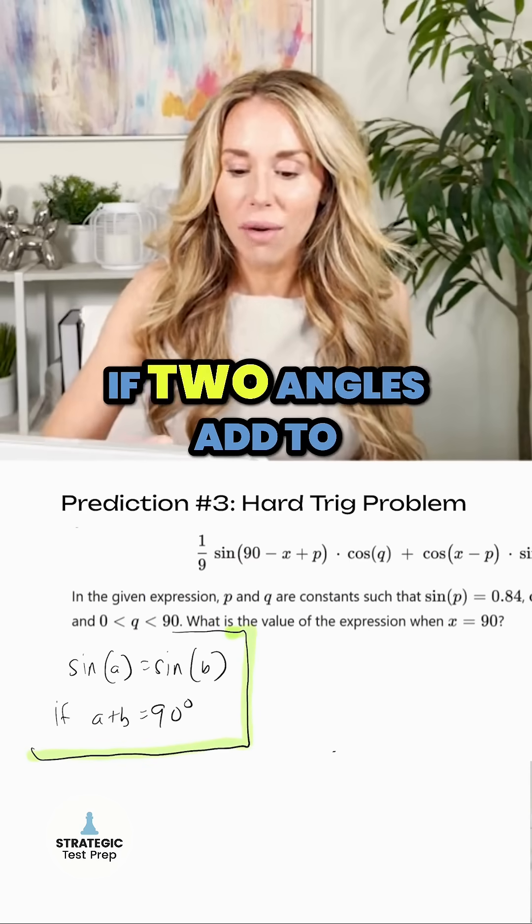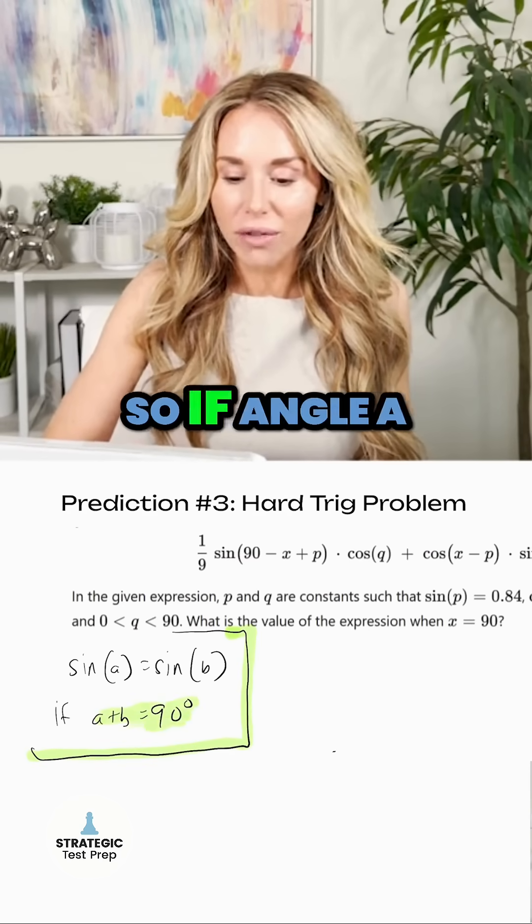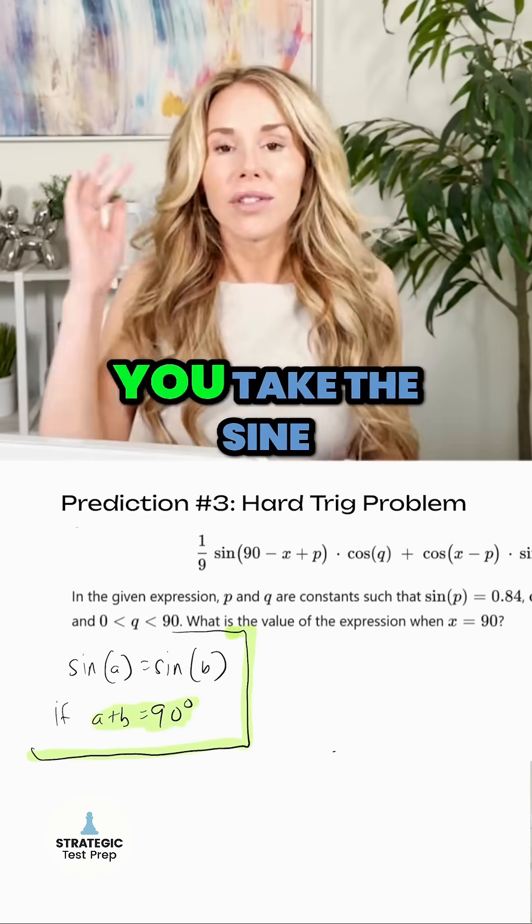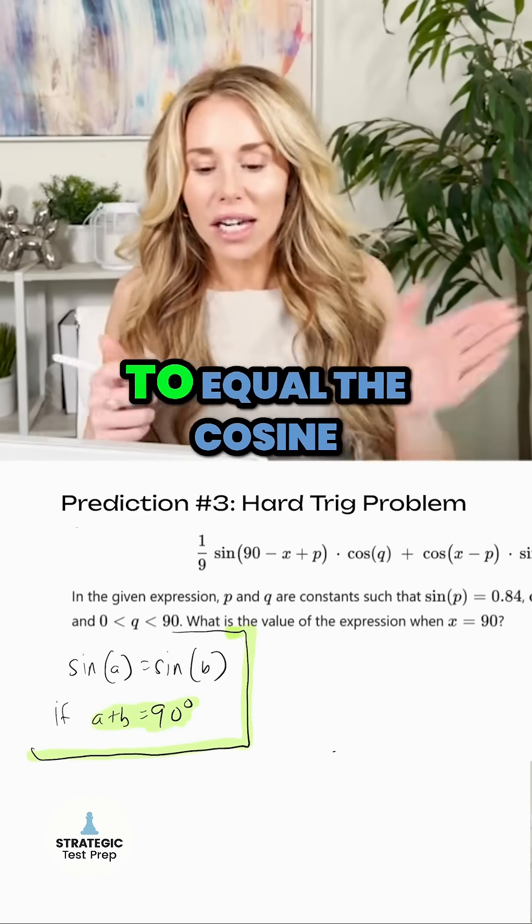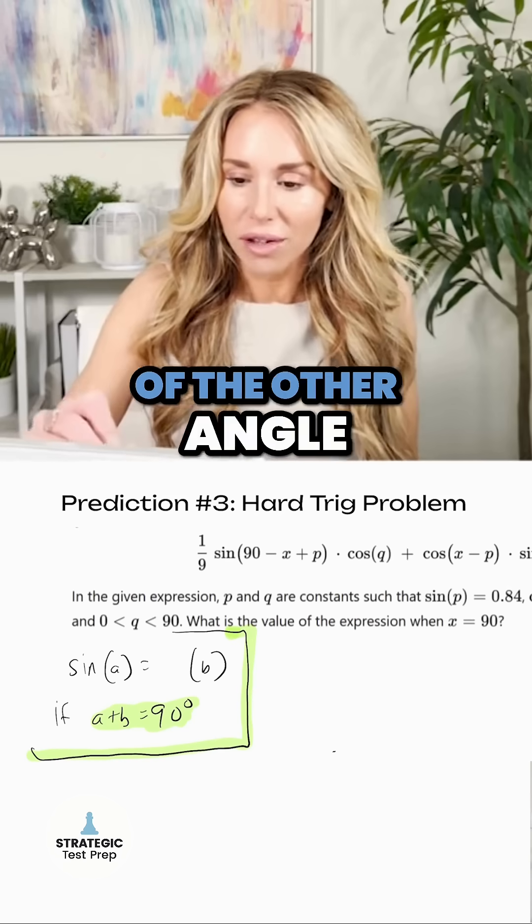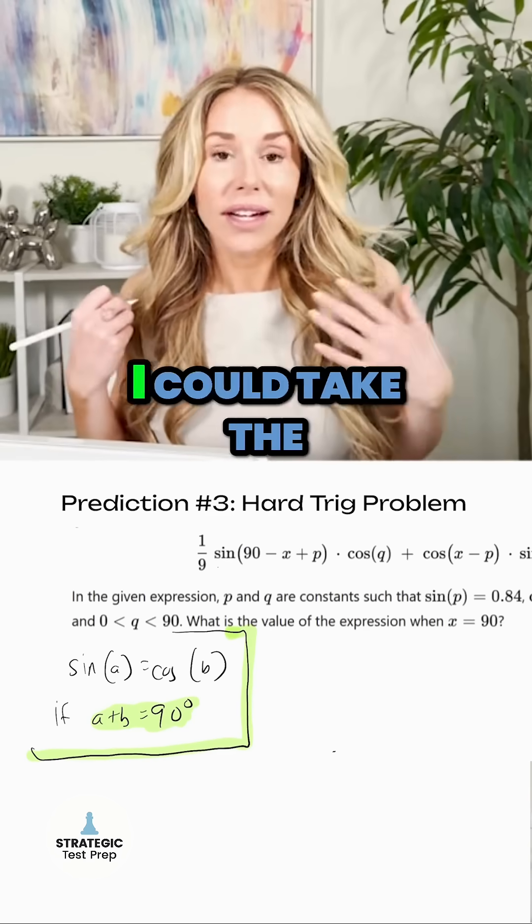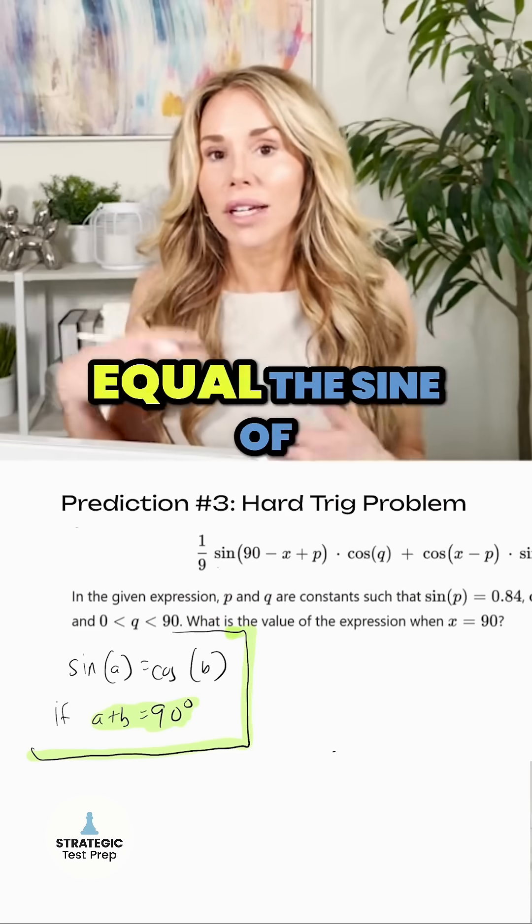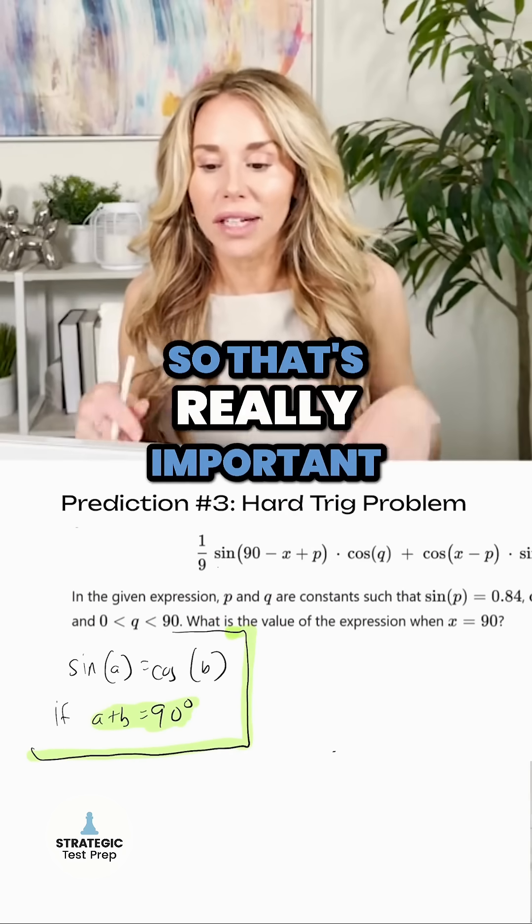I put it off to the side. Basically, if two angles add to 90 degrees, so if angle A and angle B are complementary, you take the sine of one of the angles and it's going to equal the cosine of the other angle. And it could be vice versa. I could take the cosine of angle A and then it will equal the sine of angle B. So that's really important to know.